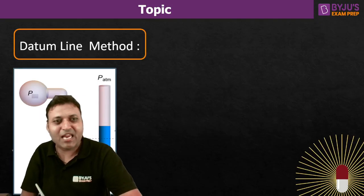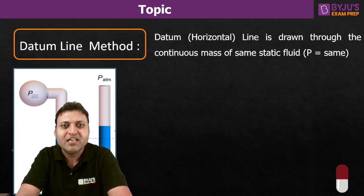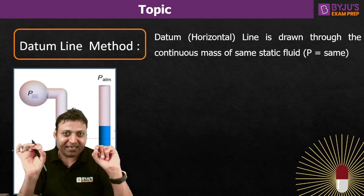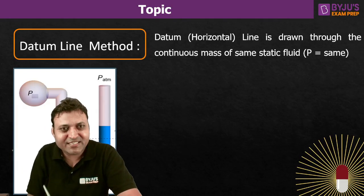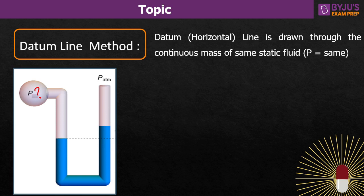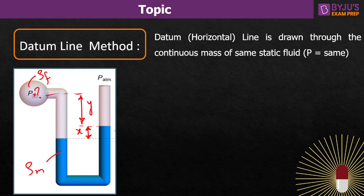There is one more method — the concept is still Pascal's law and hydrostatic law — called the datum line method. What we do here is draw a horizontal line such that the points lying on it have the same pressure. So rather than jumping from one point to another, we draw a horizontal line where all points satisfy the conditions of Pascal's law — joined by a continuous mass of the same static fluid. This can be treated as a datum line.